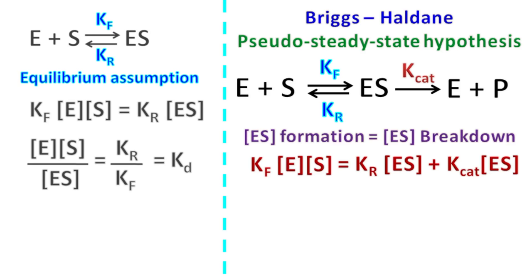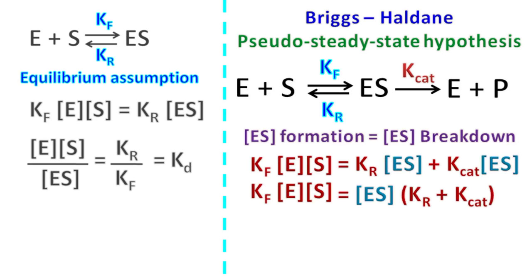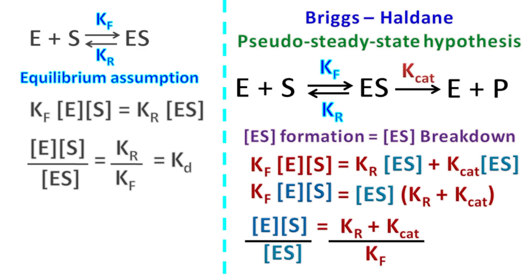On the right-hand side, we can take ES common, so that Kf·E·S = ES·(Kr + Kcat). Taking the ratio, E·S / ES = (Kr + Kcat) / Kf. This is known as Km, the Michaelis-Menten constant.